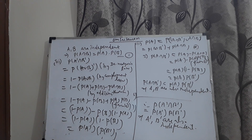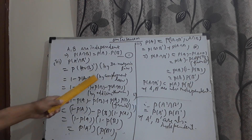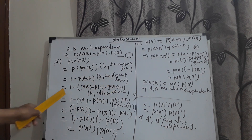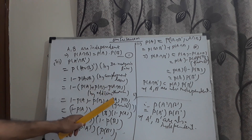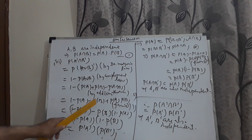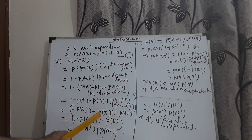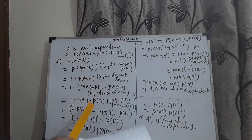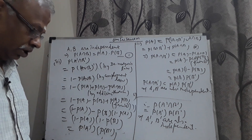Let me repeat the third result. P(A'∩B') can be written as P((A∪B)') by De Morgan's law, which equals 1 − P(A∪B) by the complement law. Applying the addition theorem for two events: 1 − P(A) − P(B) + P(A)·P(B) from result 1. Taking −P(B) as common from the last three terms, then taking (1 − P(A)) as common gives P(A')·P(B'). So P(A'∩B') = P(A')·P(B'), therefore A', B' are also independent.